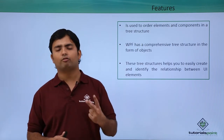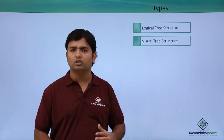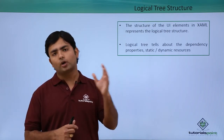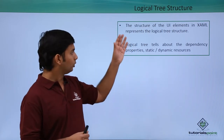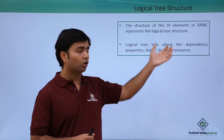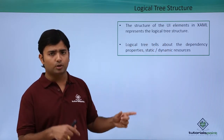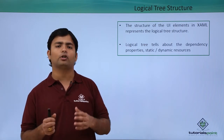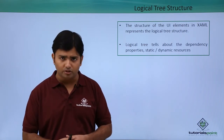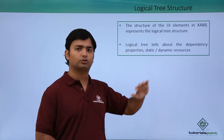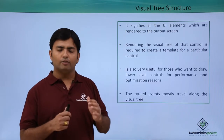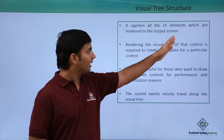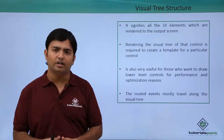In WPF particularly, we have two kinds of tree structures: the Logical Tree and the Visual Tree. The Logical Tree is what you see at design time — it is the structure of UI elements in XAML and represents the logical tree. It can be used to get dependency properties as well as bindings like static resource or dynamic resource. The Visual Tree, on the other hand, is what you see at the output screen — it signifies all the UI elements rendered at runtime.